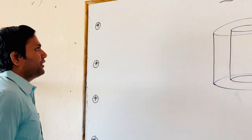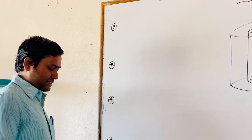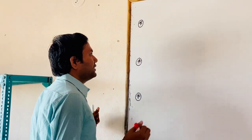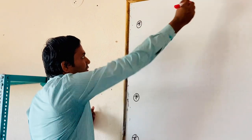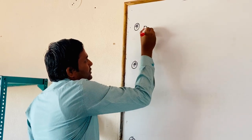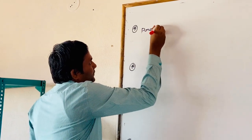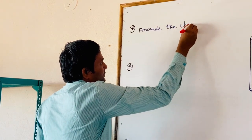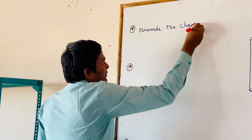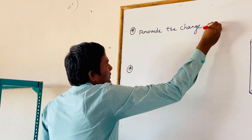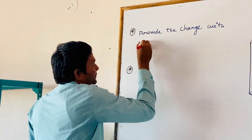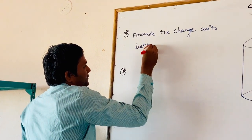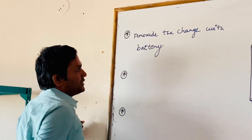In order to calculate the capacitance of the cylindrical capacitor, we can follow these steps. The first step is to provide the charge with a battery.